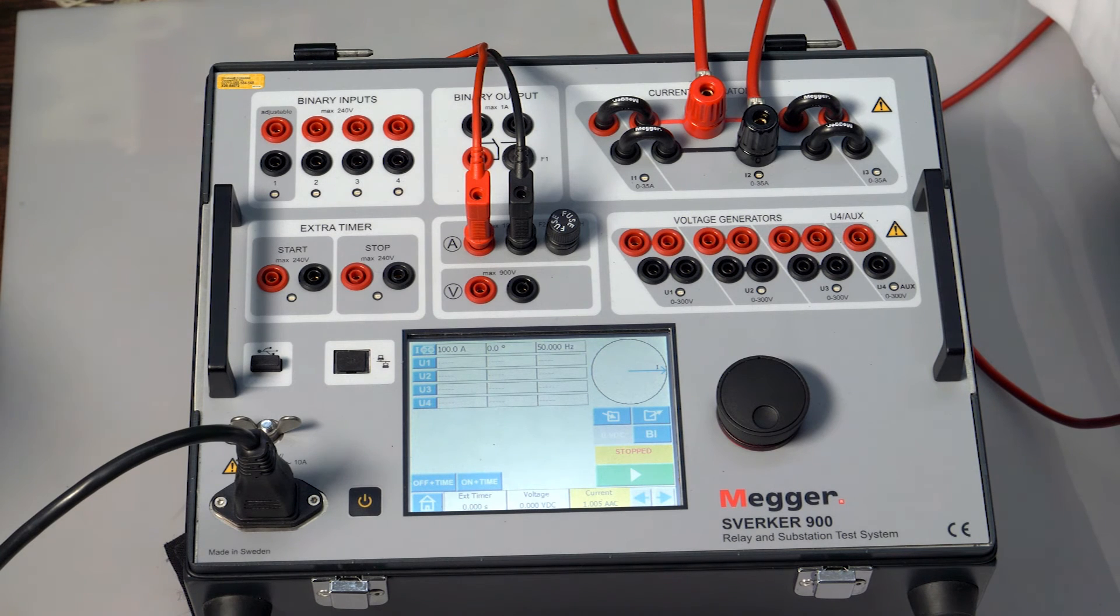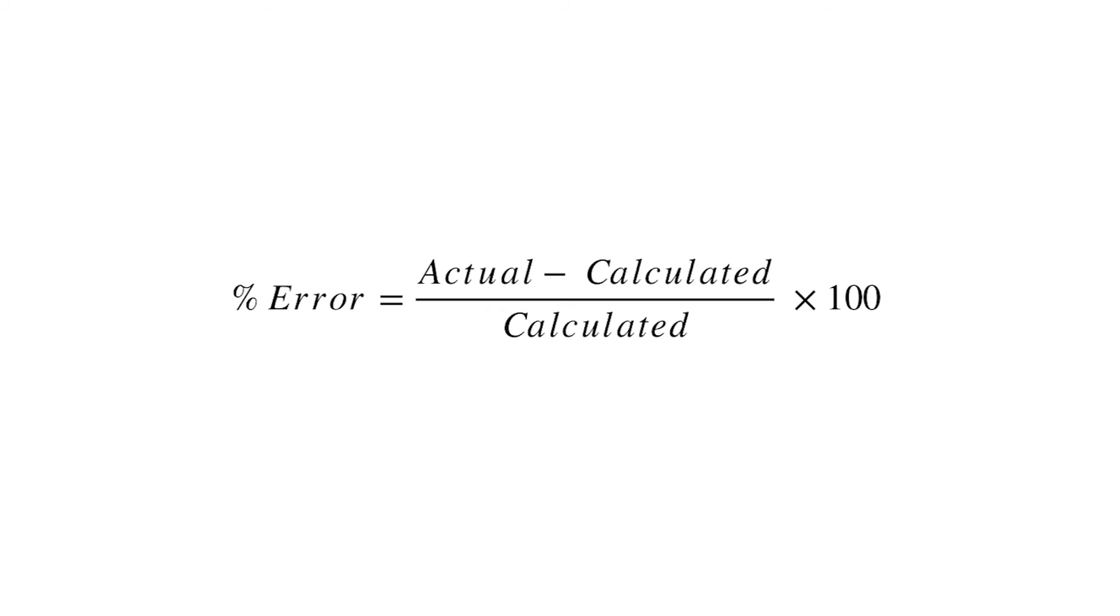So we have the calculated value and the measured value noted in a table. The error is calculated using the formula. Percentage error equals the measured value minus the calculated value, divided by the calculated value times 100. The error can be verified to ensure that it is within the acceptable limits.